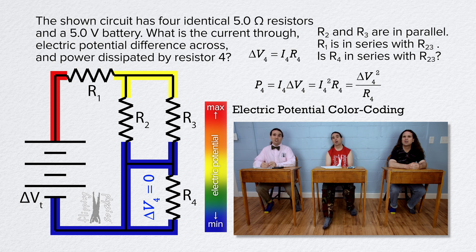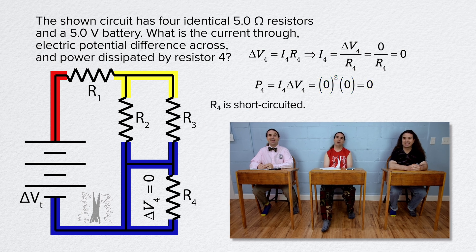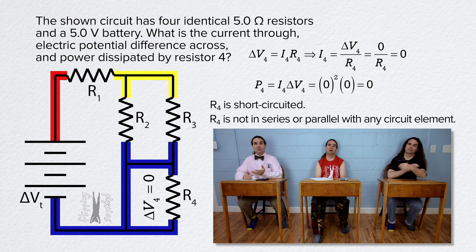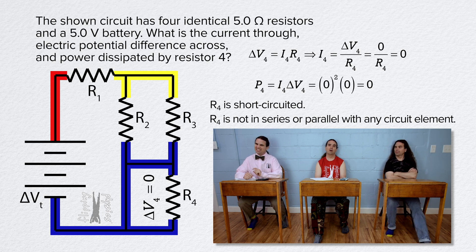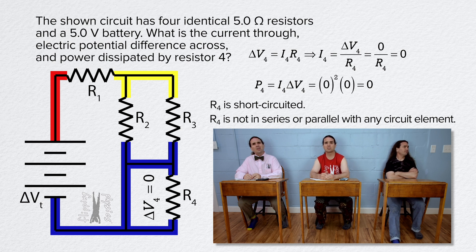There is no change in electric potential across resistor 4, so there is no current through resistor 4 and no power dissipated in resistor 4. Resistor 4 is short-circuited in this circuit, and so resistor 4 is neither in series nor in parallel with any resistors in the circuit. That is sneaky, Mr. P. Actually, I don't think it's sneaky — you just have to look carefully at the circuit and not jump to conclusions. That is correct, Bobby.